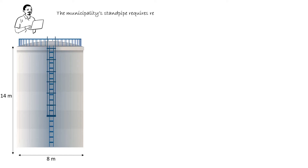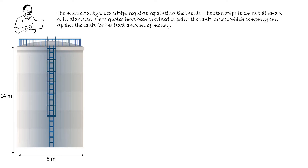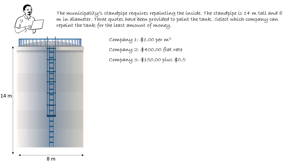The municipality's standpipe requires repainting the inside. The standpipe is 14 metres tall and 8 metres in diameter. Three quotes have been provided to paint the tank. Select which company can repaint the tank for the least amount of money. Company 1 will charge $1 per square metre to paint. Company 2 will charge a flat rate of $400. And Company 3 will charge $150 plus 55 cents per square metre.